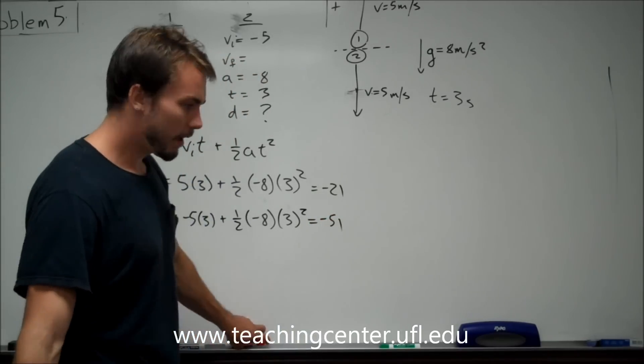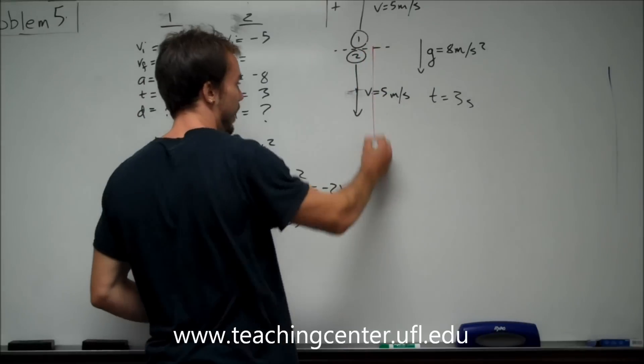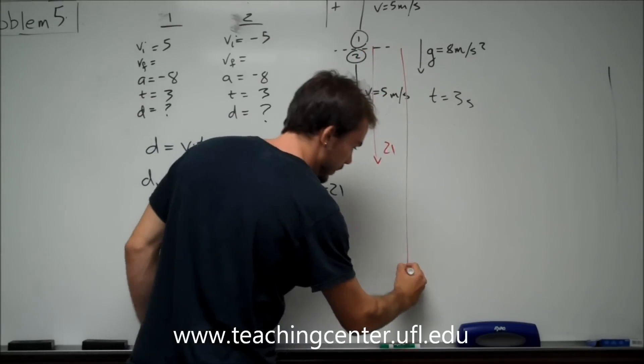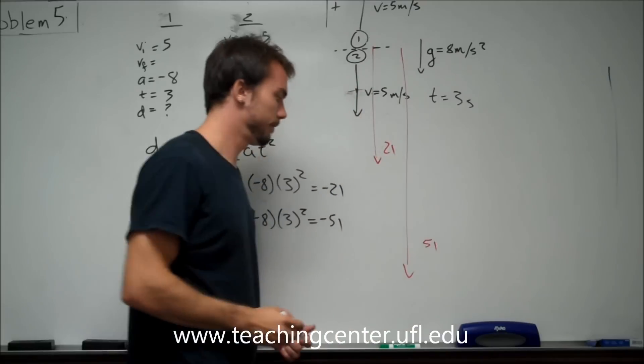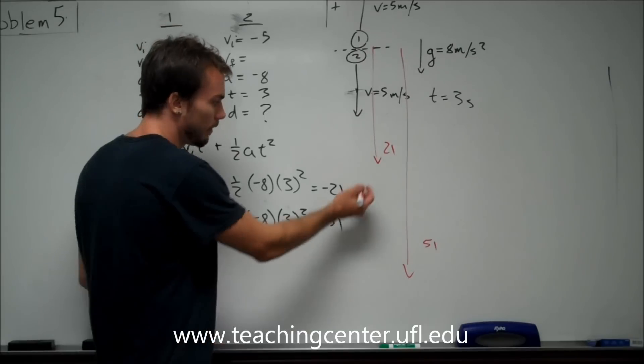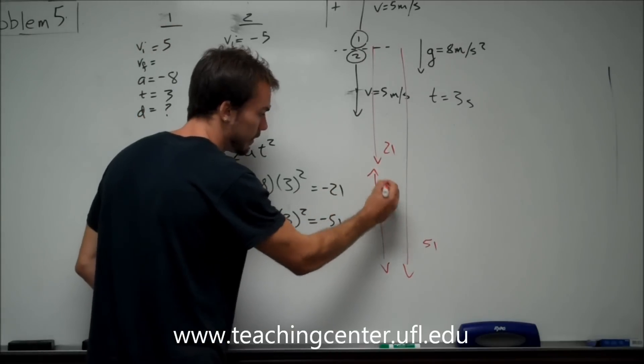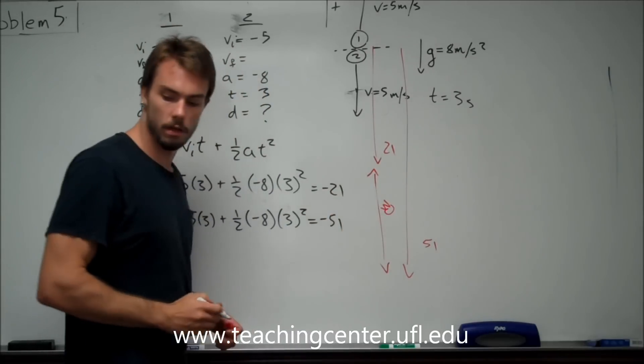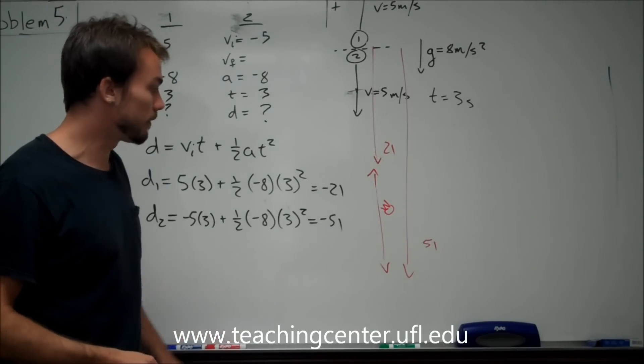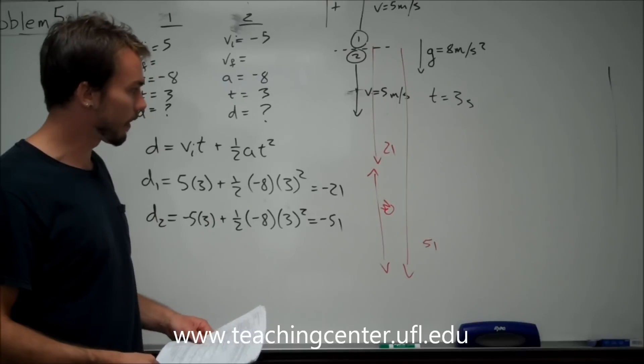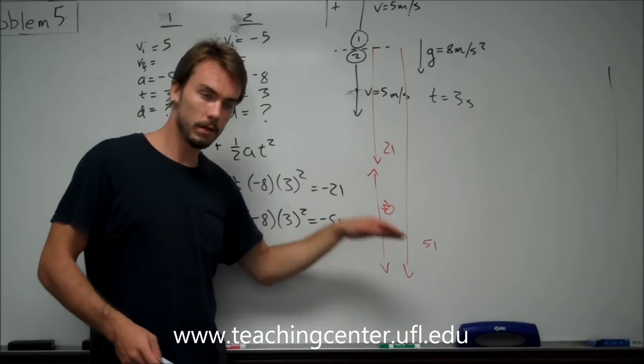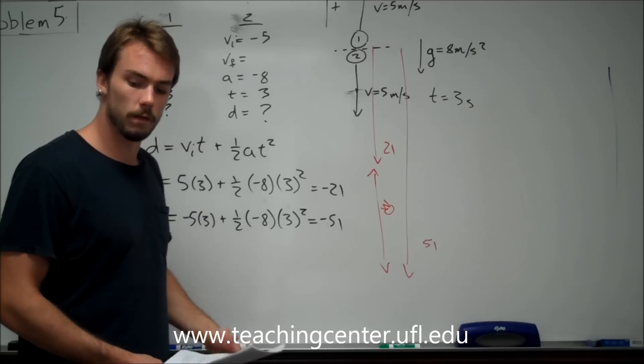So, what's happening here is we have, this guy goes down 21, the other one goes down 51. So, if you can look at that, you can just subtract the 21 and 51 and say, the distance between them is just going to be 30. That's exactly what they're asking for, is the distance between them after 3 seconds. This guy is 21 below where they started, this one is 51 below where they started, and you have to put 30 meters as your answer.